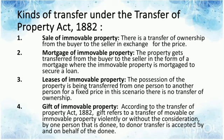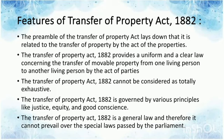The transfer is accepted by and on behalf of the donee. Features of the Transfer of Property Act 1882: The preamble of the Transfer of Property Act lays down that it is related to the transfer of property by the act of the parties. This Transfer of Property Act provides a uniform and clear law concerning the transfer of movable or immovable property from one living person to another living person. While the Transfer of Property Act cannot be considered totally exhaustive, it covers the transfer of immovable property from the act of parties. Transfer of property is subject to the concurrent list, which provides power to both the legislature and the parliament to pass laws related to the matter of transfer of property.